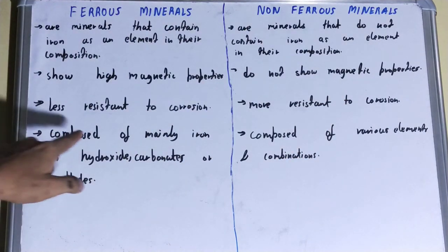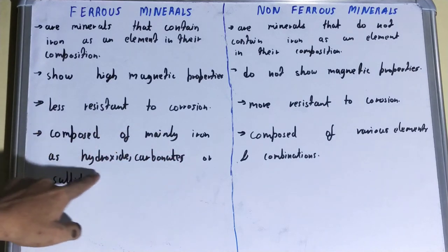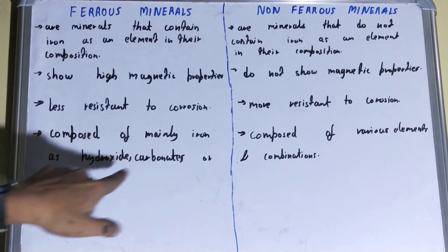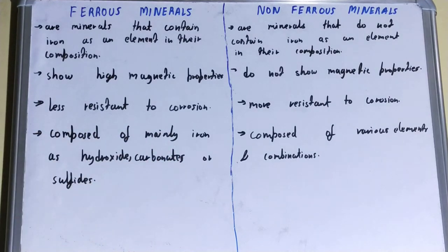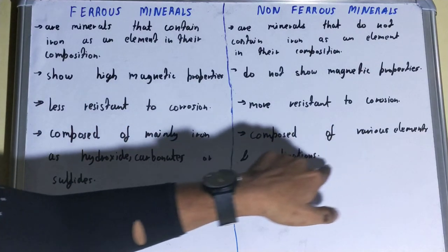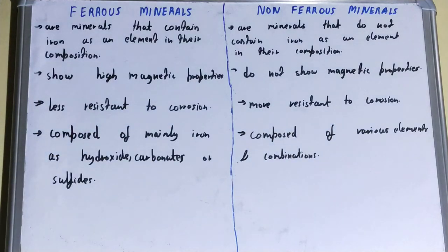Ferrous minerals are composed mainly of iron as hydroxides, carbonates, or sulfites. Non-ferrous minerals are composed of various elements and combinations. This covers the key differences between ferrous and non-ferrous minerals.